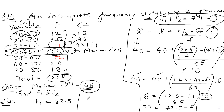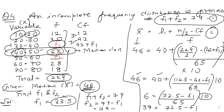From equation one, F1 + F2 = 79. Since F1 = 33.5, F2 = 79 − 33.5 = 45.5. So F1 = 33.5 and F2 = 45.5.